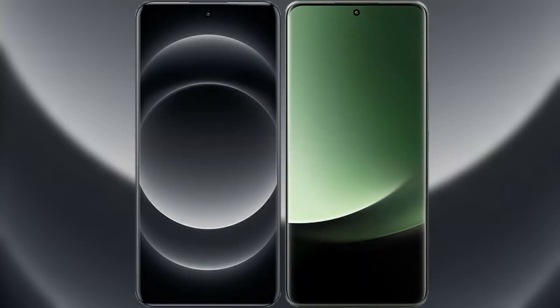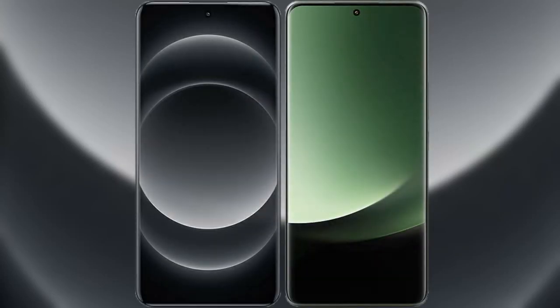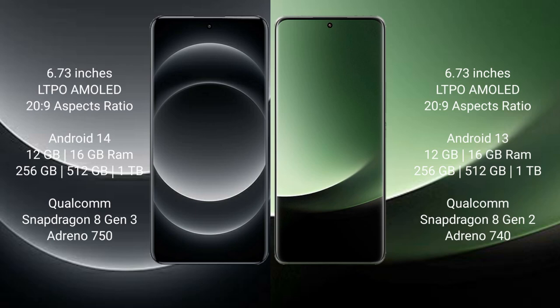I will compare the new Xiaomi 14 Ultra with the Xiaomi 13 Ultra. The Xiaomi 14 Ultra comes with a 6.73-inch LTPO display and the Xiaomi 13 Ultra also comes with a 6.73-inch LTPO display. The Xiaomi 14 Ultra runs on Android 14 operating system, while the Xiaomi 13 Ultra runs on Android 13 operating system.